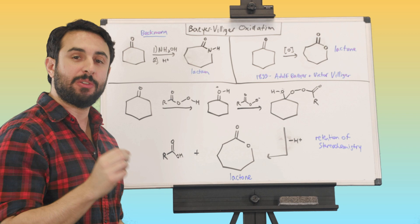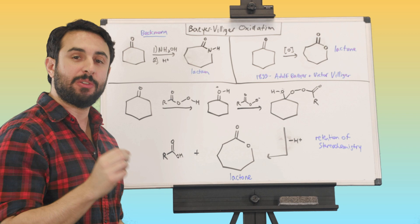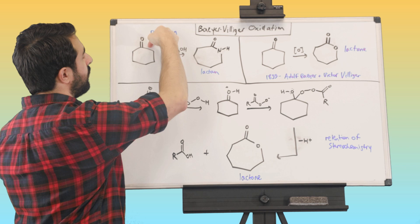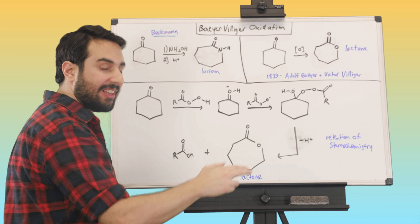So essentially what the Beckman rearrangement did, if we just zoom all the way out, is we just took a nitrogen atom and we stuck it right in the middle of this carbon-carbon bond right there. And so now we've got a nitrogen, and we know that a cyclic amide is called a lactam. That's what that functional group is called.